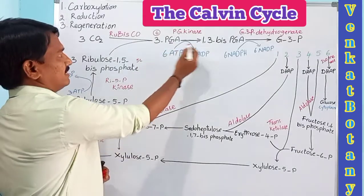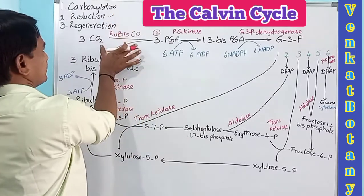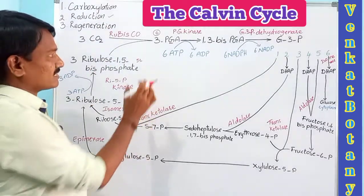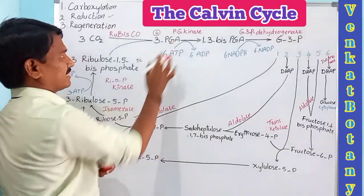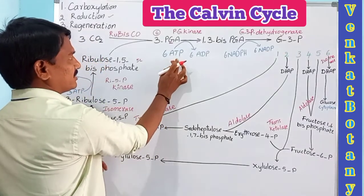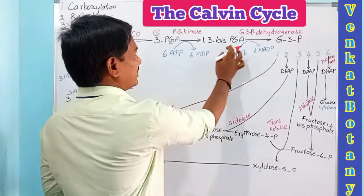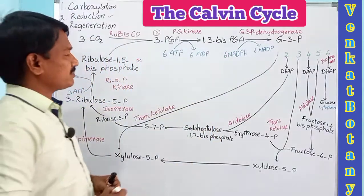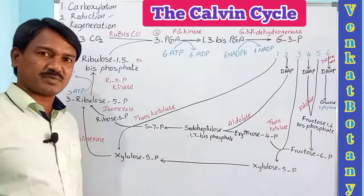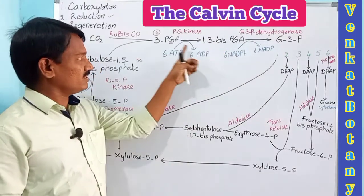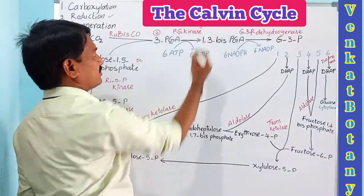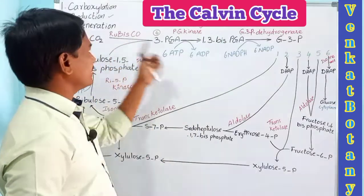The next step is the reduction phase. Reduction has two sub-steps. In the first sub-step, 3-phosphoglyceric acid undergoes a phosphorylation reaction. Six ATP molecules are utilized to convert six molecules of 3-PGA into six molecules of 1,3-bisphosphoglyceric acid. This reaction is catalyzed by the enzyme phosphoglycerate kinase.